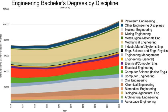Engineering education is the activity of teaching knowledge and principles to the professional practice of engineering. It includes an initial education, bachelor's and/or master's degree, and any advanced education and specializations that follow. Engineering education is typically accompanied by additional postgraduate examinations and supervised training as the requirements for a professional engineering license. The length of education and training to qualify as a basic professional engineer is typically 8–12 years, with 15–20 years for an engineer who takes responsibility for major projects.